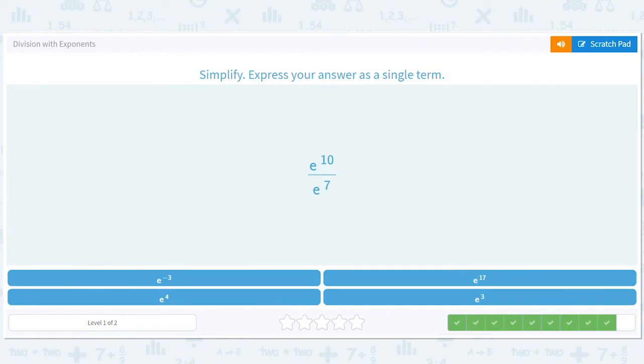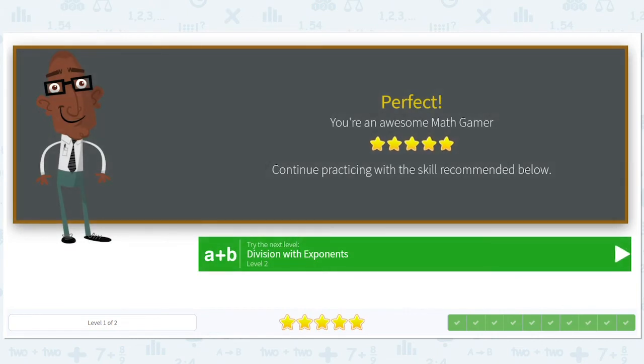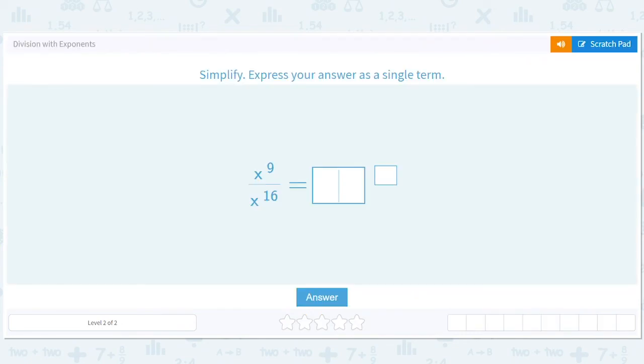Ten minus seven is three so we have e to the third. This is a pretty simple, I don't want to say it's simple, I mean it gets hard when you're trying to combine it with other stuff but on its own it's a pretty simple rule. Let's see what level two is. Okay the numbers get a little bit higher but same idea.